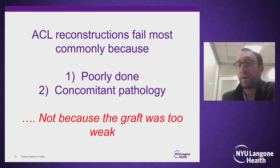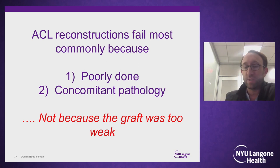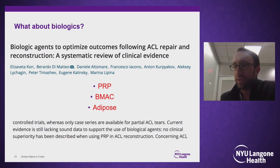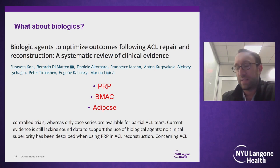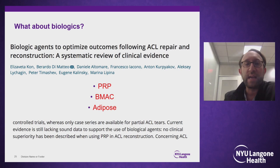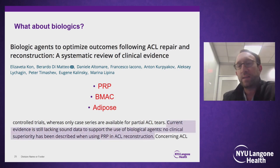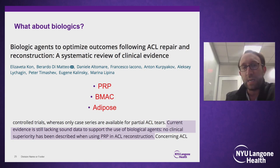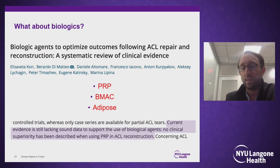When thinking about why ACLs fail, it's most commonly because either the reconstruction was poorly done or there's concomitant pathology that couldn't be addressed — like a high-grade meniscectomy — and not really because the graft was too weak. The last thing I'll discuss is biologics, which we think is the wave of the future. A recent study by Elisabetta Cohn out of Italy, one of the global champions of biologics, looked at PRP, BMAC, and adipose to assess outcome improvements after ACL repair or reconstruction. They found that current evidence is still lacking sound data to support biological agents, and no clinical superiority has been described with PRP in ACL reconstruction. We still lack adequate data showing superiority, though increased costs are well established.